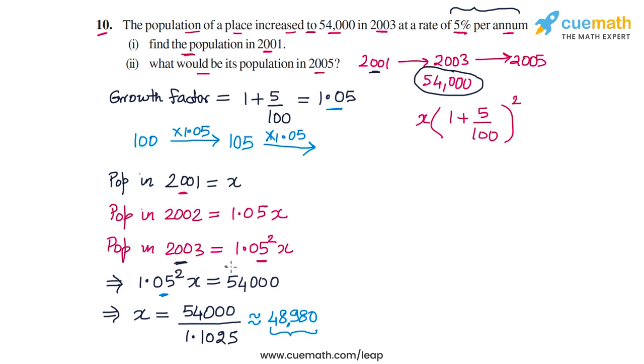Now, we have the population in 2003. So what will be the population in 2005? It will be simply the population in 2003, which is 54,000, into the growth factor multiplied twice, because from 2003 to 2005 there are two years. So we can do 1.05 and square. So this will be the population in 2005. This is equal to 54,000 into 1.1025.